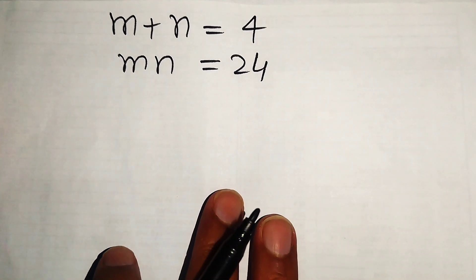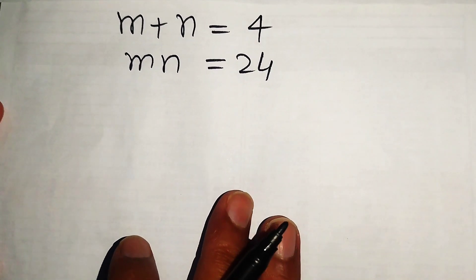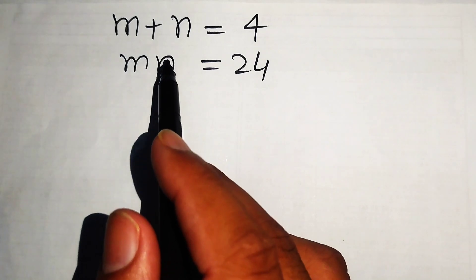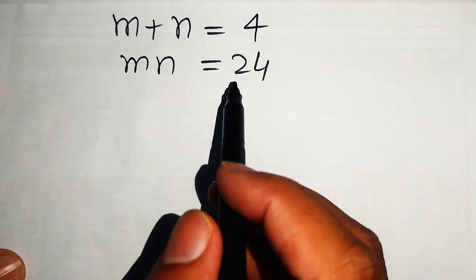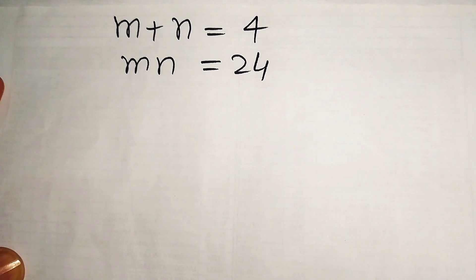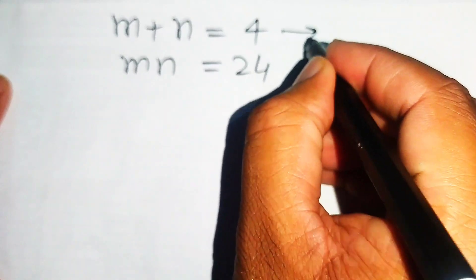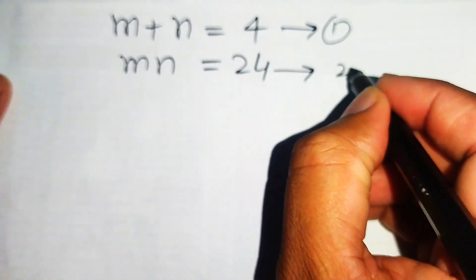Hello everyone, welcome. We will solve this algebra problem. We have m plus n equals 4, which we call equation number one, and m times n equals 24, which we call equation number two. We will solve for the values of m and n.